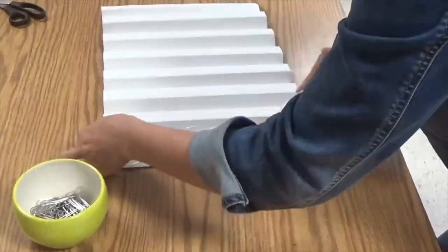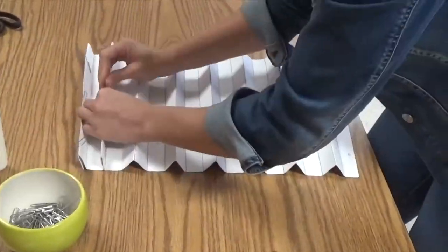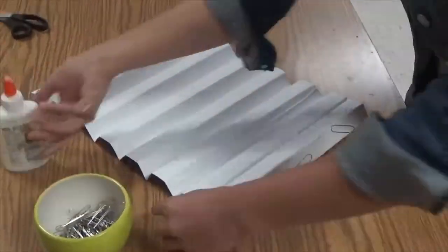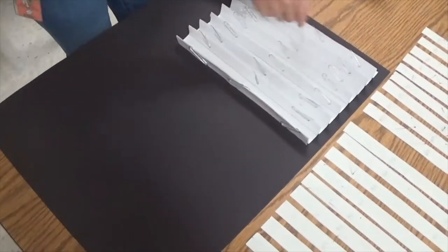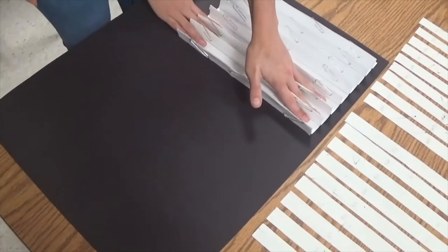After your hills are nice and dry, you will then glue your folded base paper to a colored backer paper. I chose black for my example. Any color could work. It's up to the artist to choose.